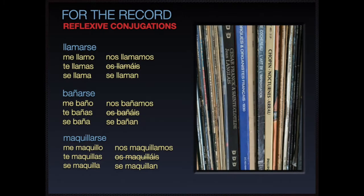Here are some examples of reflexive conjugations: llamarse, bañarse, maquillarse. The first two conjugations — me llamo, te llamas, and se llama — are from Spanish 1, so you're familiar with those already. For a little practice and repetition, repeat after me: me llamo, te llamas, me baño, te bañas, me maquillo, te maquillas. And remember, the double L does make a Y sound in Spanish.